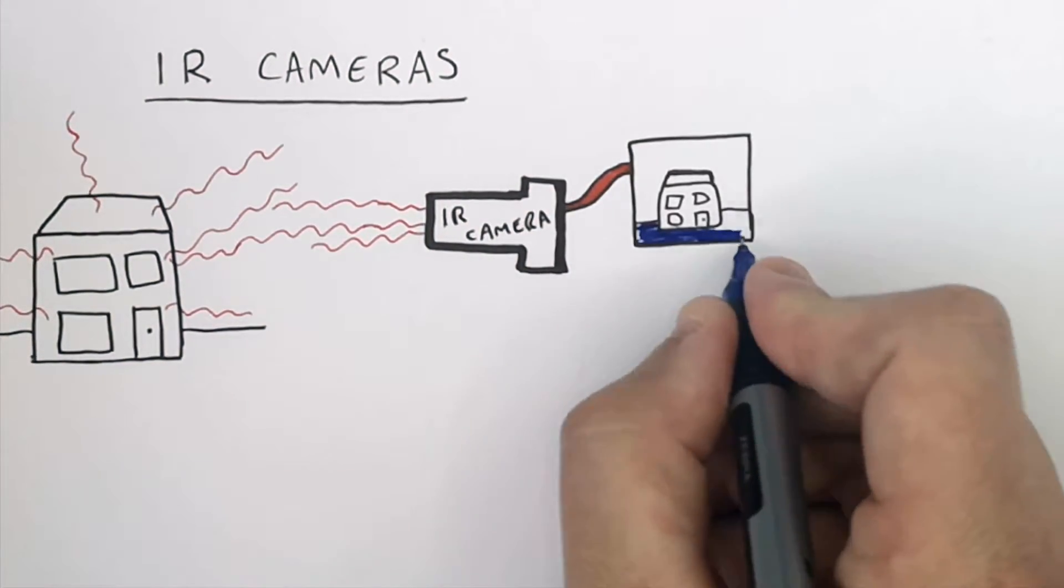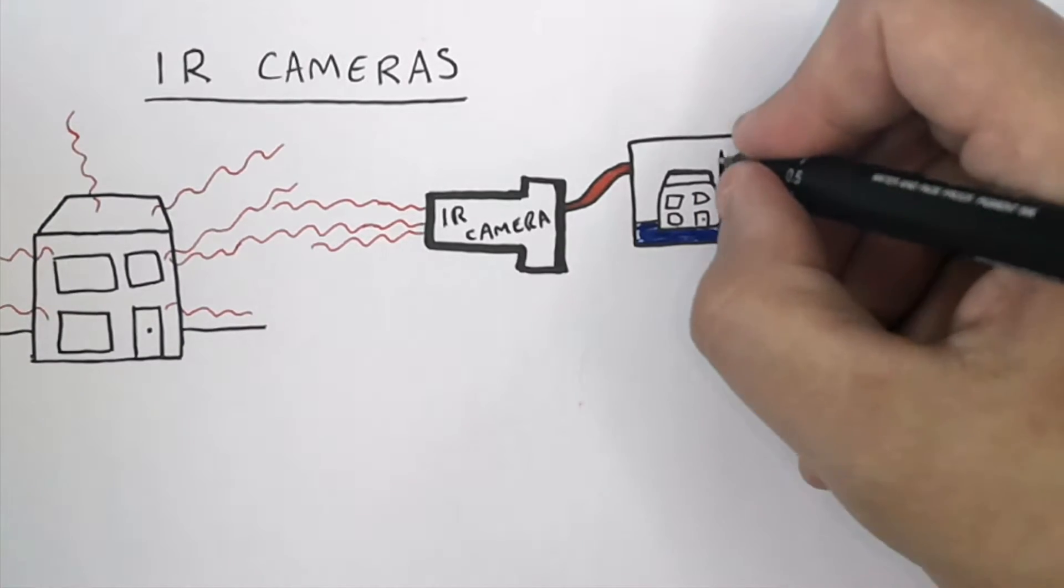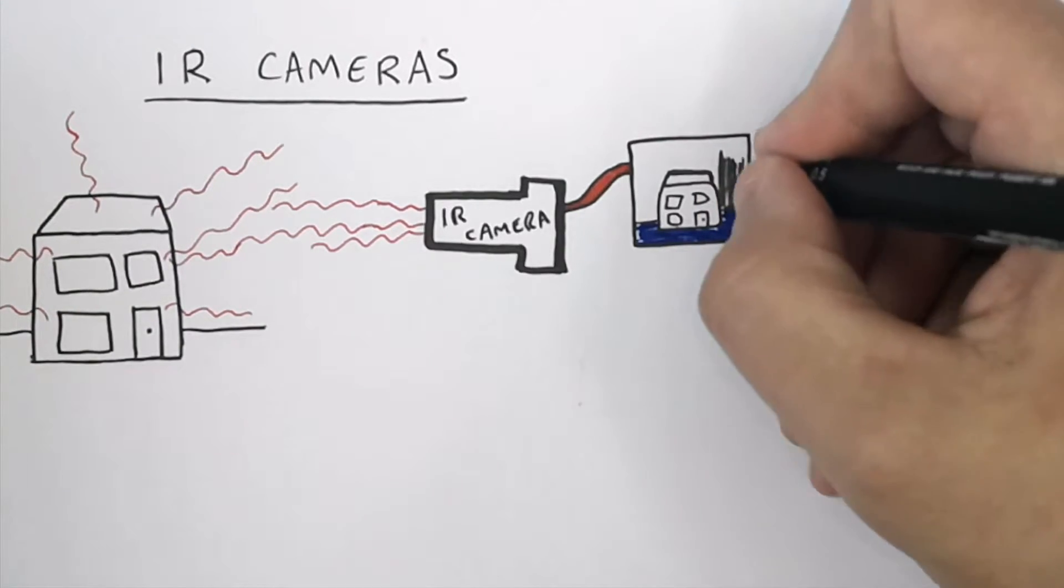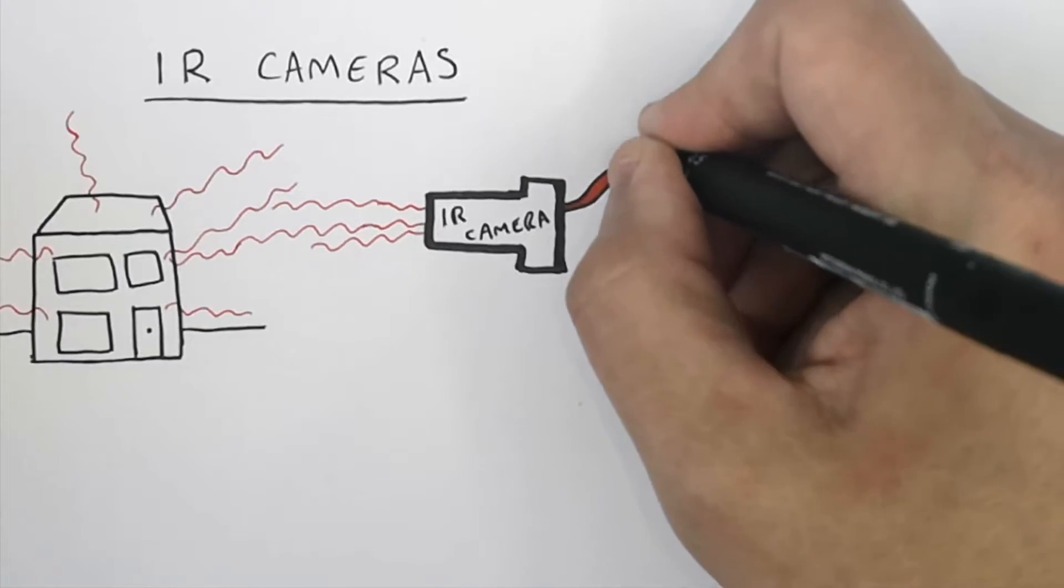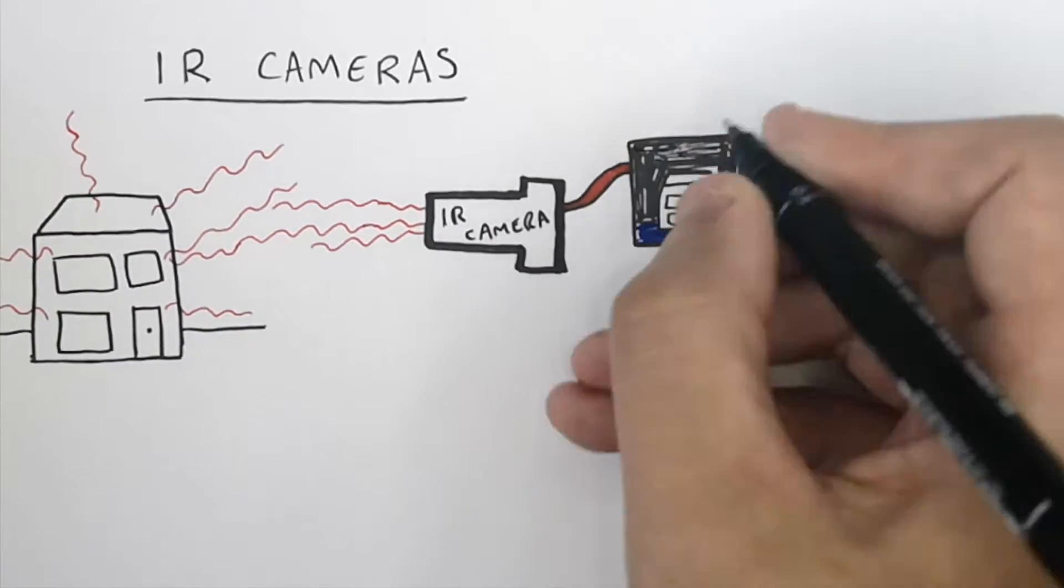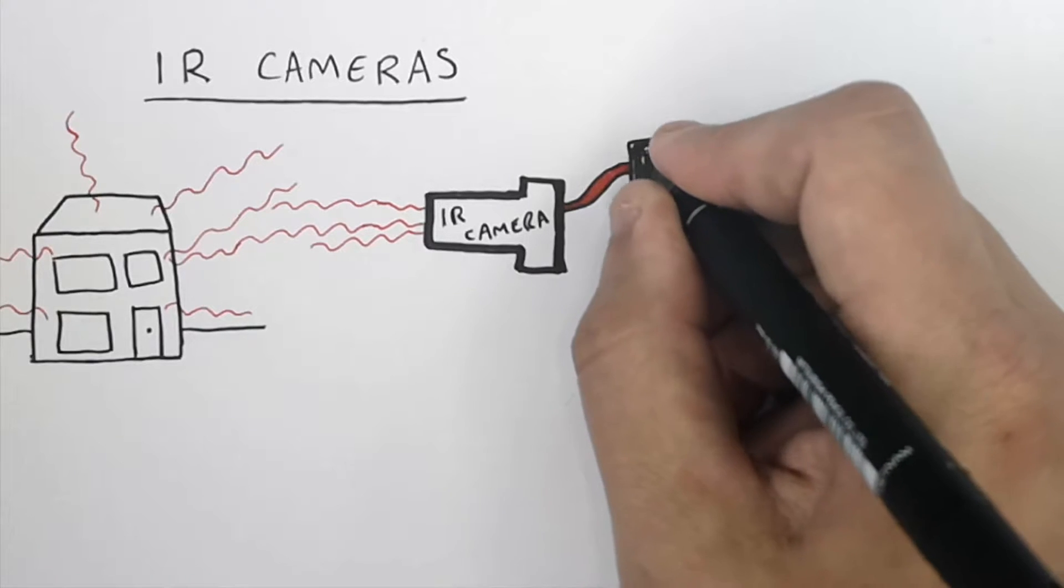Where there is low infrared radiation emission, you're going to see a black or blue color, as you can see here with the ground. The black color is going to be seen in the sky because there is little infrared radiation being emitted from the sky.